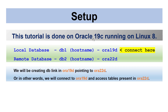This tutorial is done on Oracle 19c running on Linux 8. I have two databases: the local database hosted on DB1 with the name Aura19d, and the remote database hosted on DB2 with the name Aura22d. We will be connecting to Aura19d and accessing data present in Aura22d, so we will create the DB link in Aura19d pointing to Aura22d.